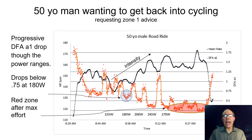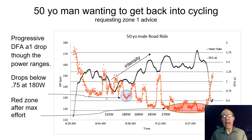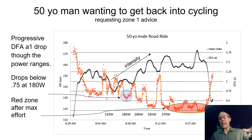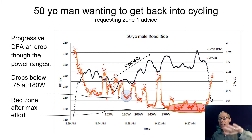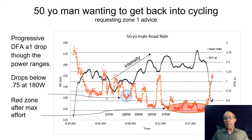Here's an example: a recording of a 50-year-old man who came to me with a question about where his zone one training should be. He was getting back into cycling and needed to build an aerobic base. We did a series of five-minute constant power intervals on the road — I gave him a PowerTap wheel for power, a heart rate monitor, and a recording watch. As intensity rises, heart rate in black goes up, but at each progressive watt stage alpha 1 drops, and we see that at about 180 watts it drops below 0.75. At higher intensities — 200, 250, 270 watts — it drops significantly and stays down thereafter.